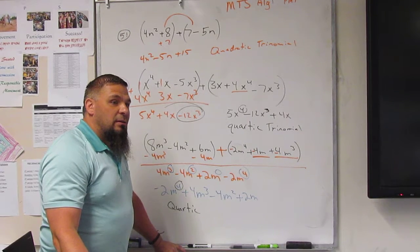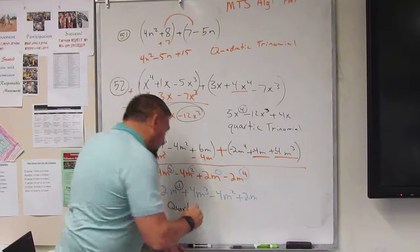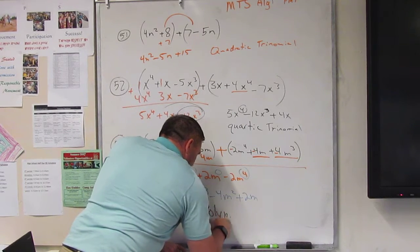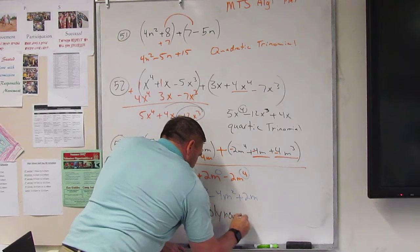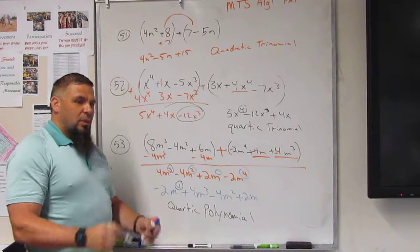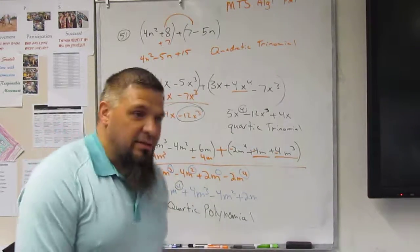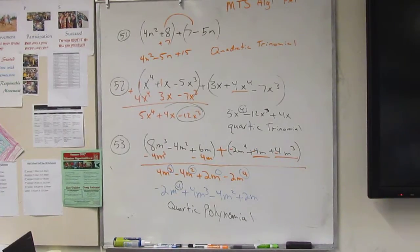Polynomial. It's the easy one. Okay. Quartic polynomial. That's it. It's 53. We've only got a few more problems. What do we call? Let's go.